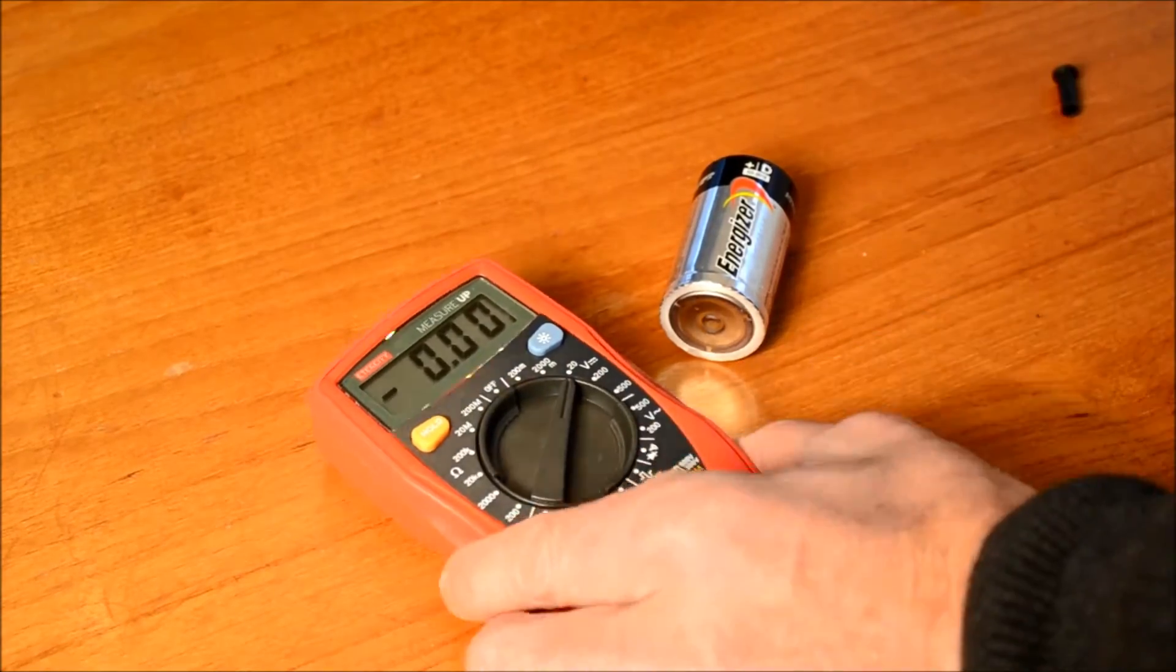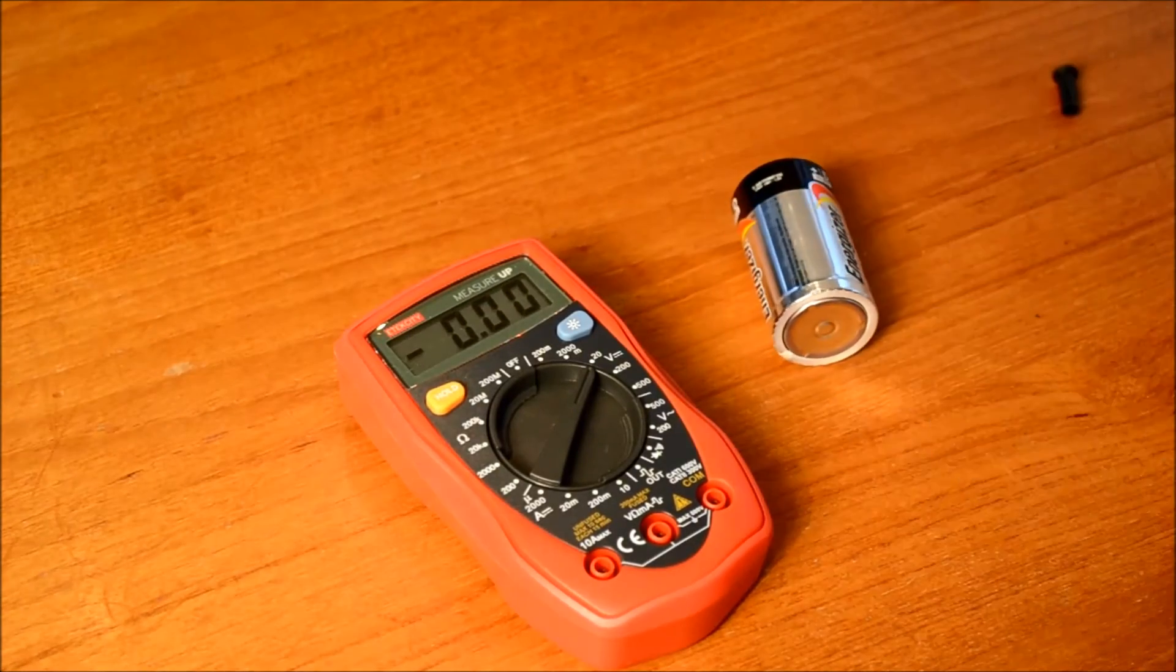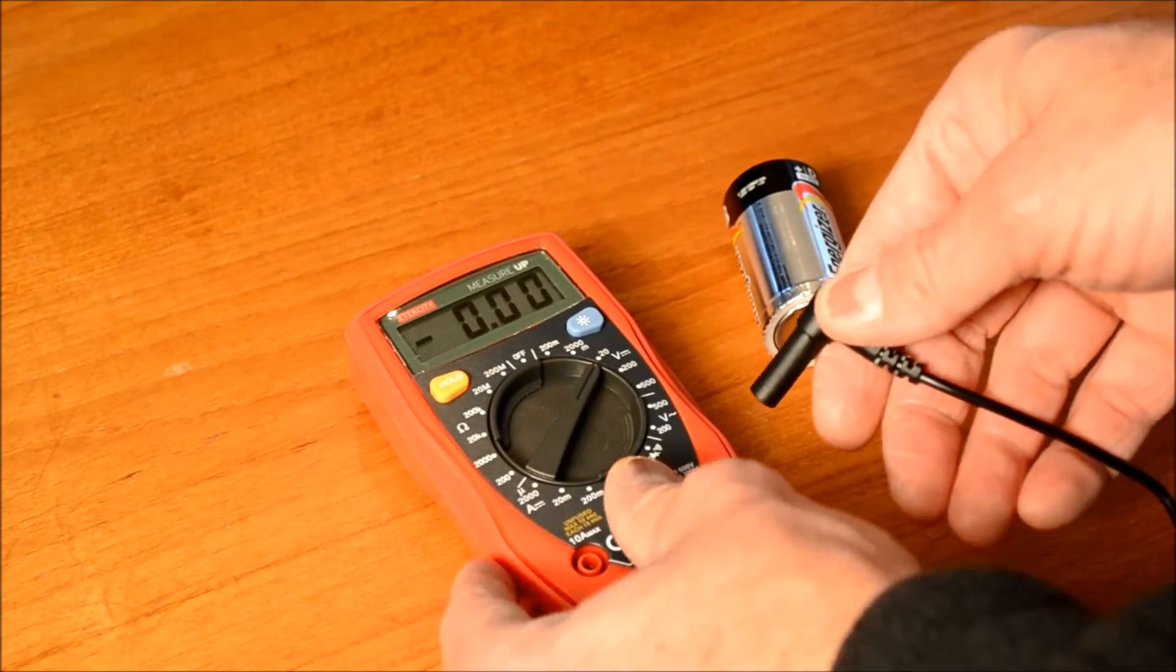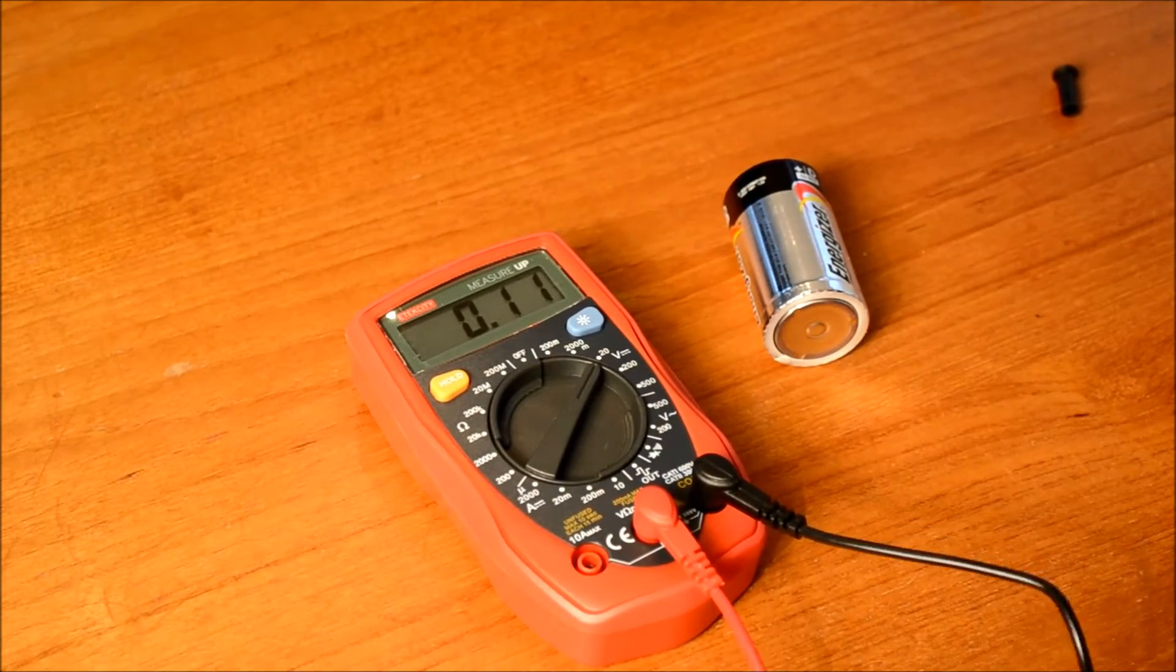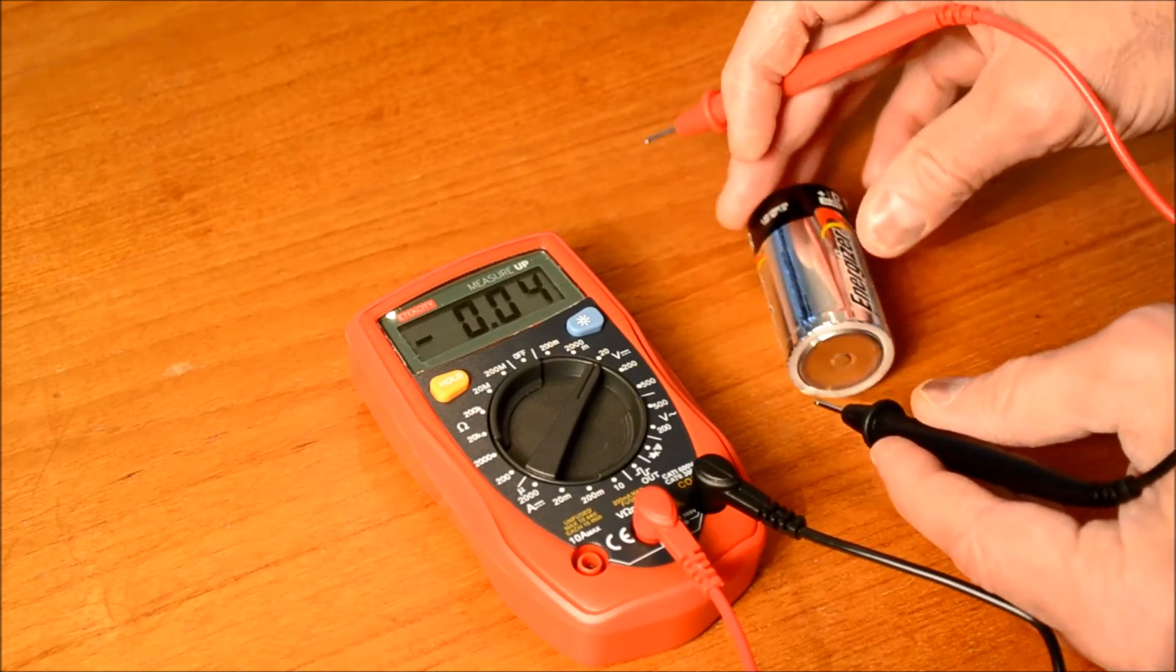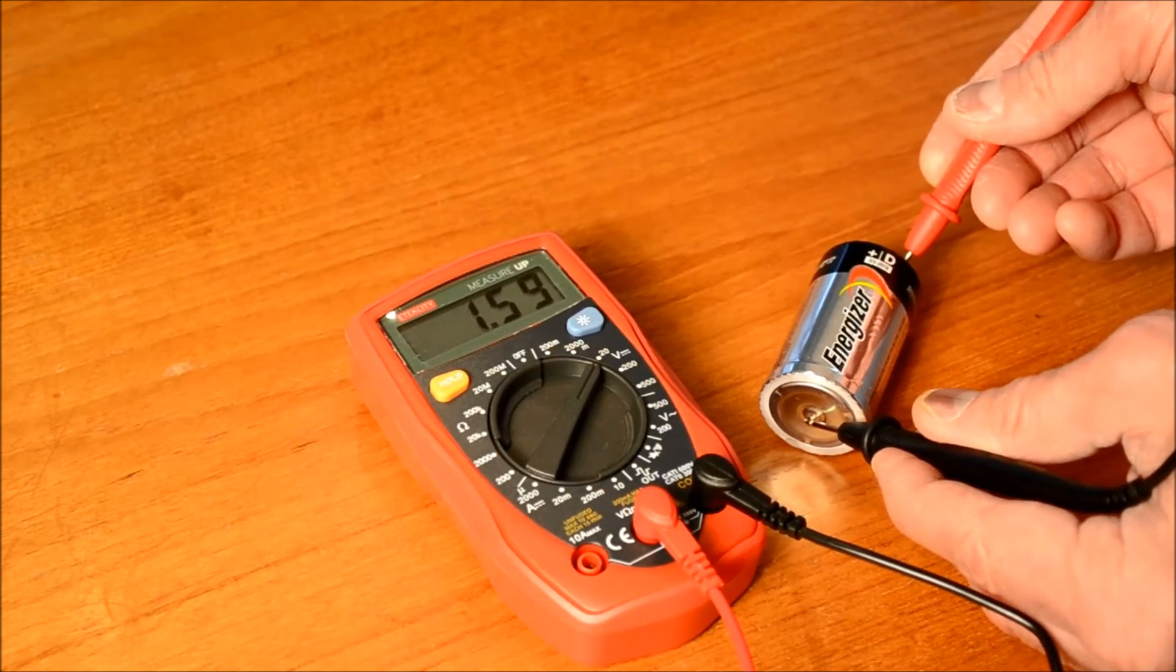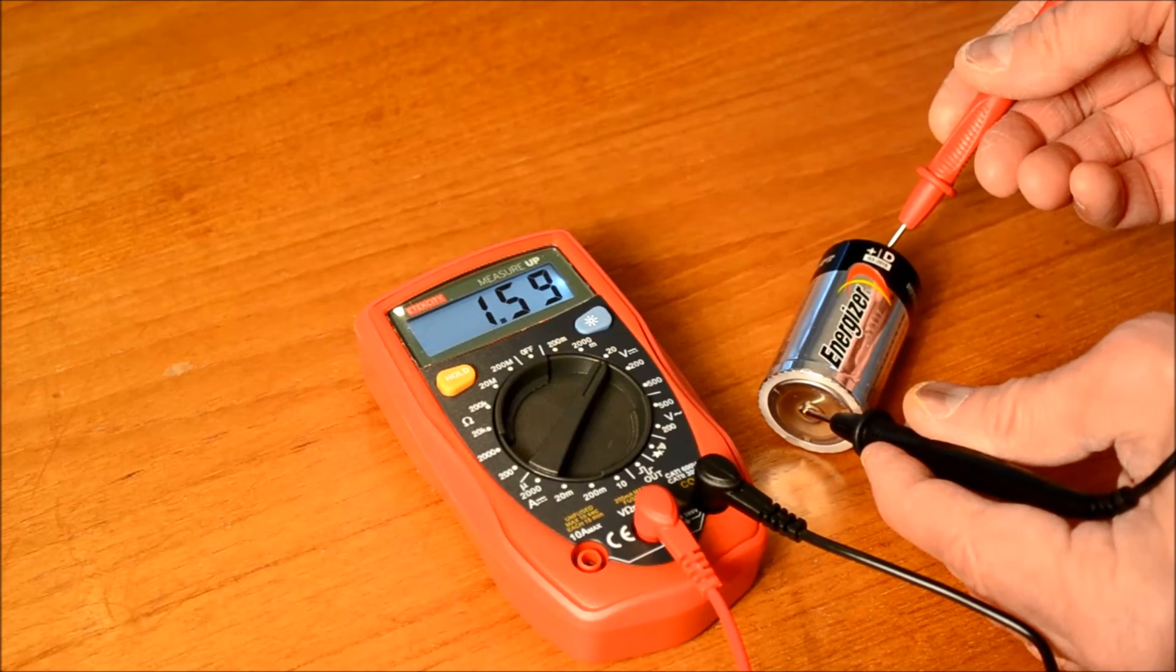So the first thing I'm going to show you is how to use the digital multimeter to measure just a DC voltage, like for example the battery. All we have to do is plug the red wire lead into the volt ohm milliamp socket and the common or black wire into the comm socket. Now we can take our battery and we'll put the ground lead or the black lead on the negative side of the battery and the red lead on the positive side of the battery and we see 1.59 volts. If it was in a dark area we could hit the backlight and we could see again 1.59 volts.